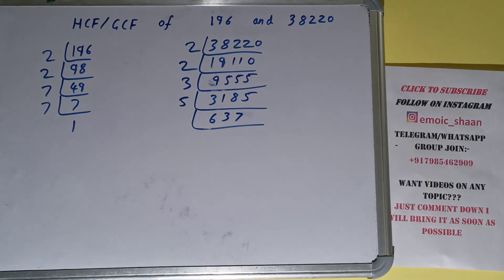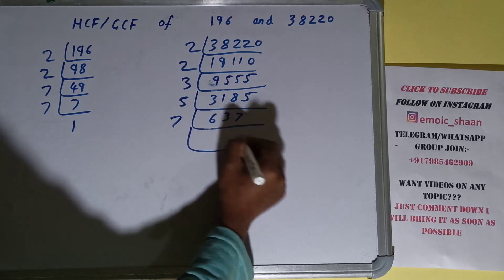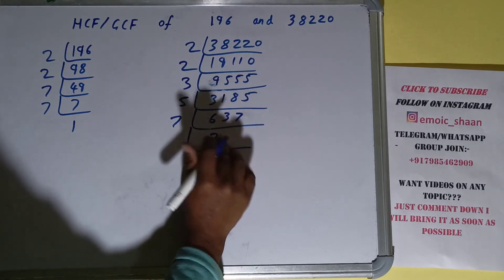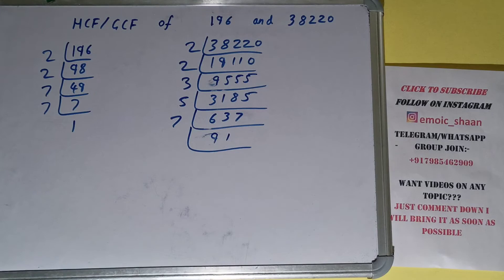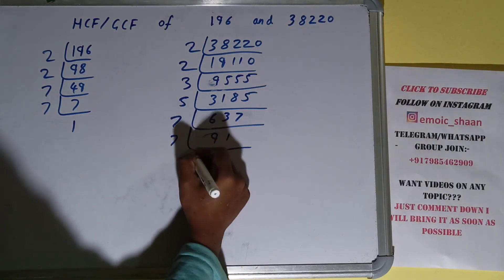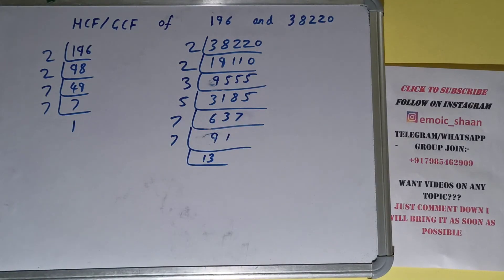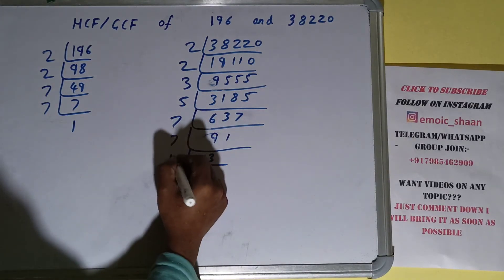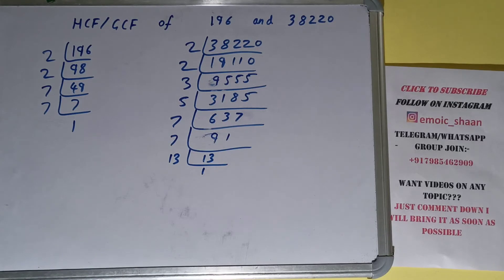Is 637 divisible by 7? Yes it is. So we'll divide and get 91. 91 is again divisible by 7, so we divide and get 13. Now 13 is a prime number, so it is only divisible by itself, giving us 1. We are done with the prime factorization step.